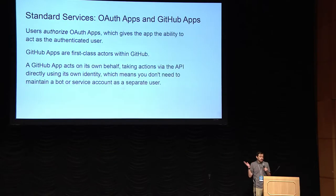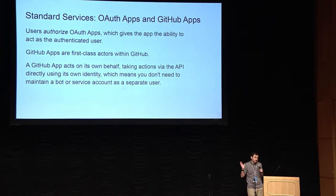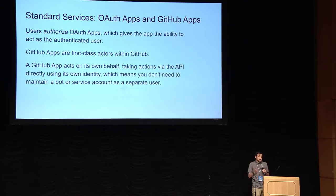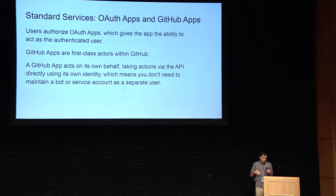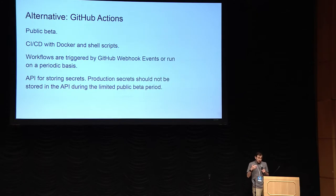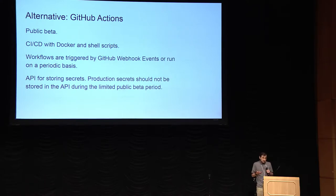The two most common ones are GitHub apps and OAuth apps. Braindead simple: just use GitHub apps. They're the newer style. A GitHub app acts on its own behalf — it can make requests as a bot, or it can make requests on behalf of your users, and I'll show you examples of both. Some of the lesser known ones: GitHub Actions is in public beta. It's essentially Docker and shell scripts. Your cloud provider gives you a lot of this functionality. I don't use it, but you can take a look at it.